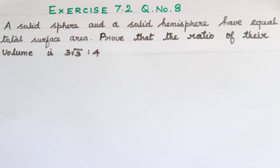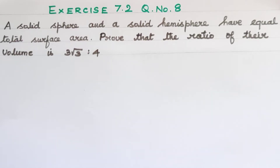Hello my dear students. 10th standard maths exercise 7.2, question no. 8 — in this video we will solve it. The question says: a solid sphere and a solid hemisphere have equal total surface area. Prove that the ratio of their volumes is 3√3 : 4.